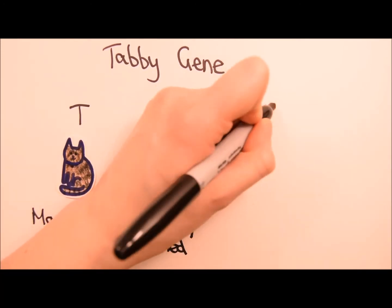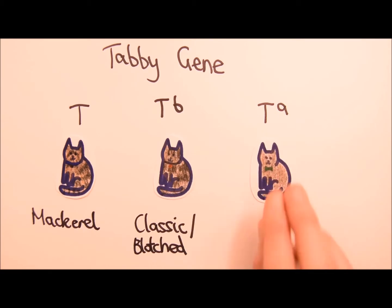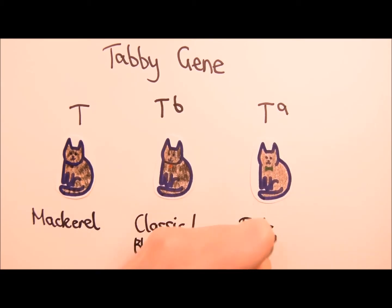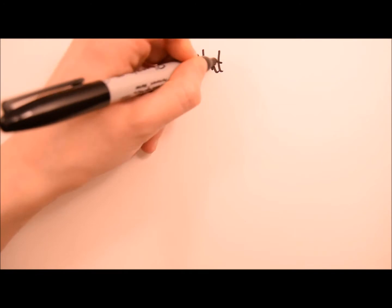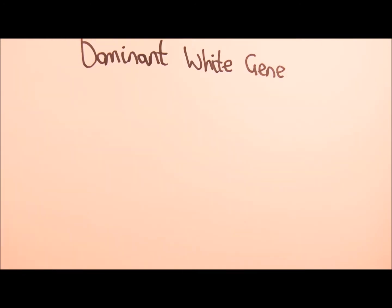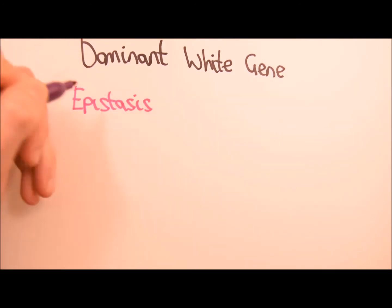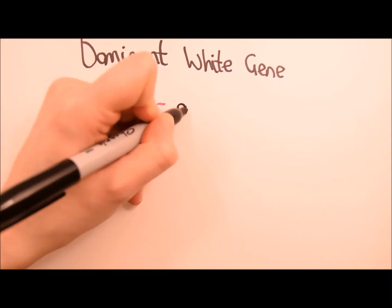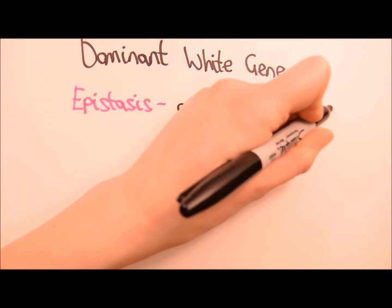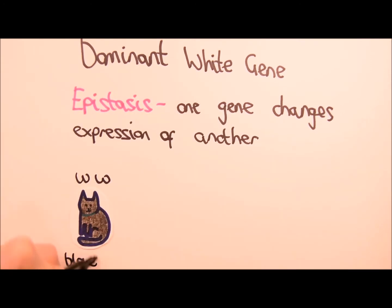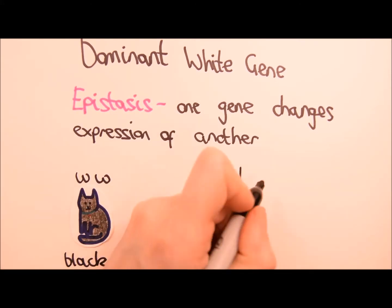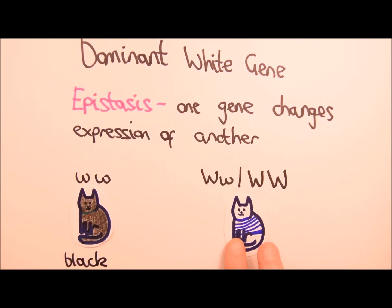The recessive allele will produce the classic, spotted tabby, or the ticked coat. Like the black coat alleles, these also have a dominance hierarchy which goes mackerel, classic, ticked. The dominant white gene in cats demonstrates epistasis, where one gene changes the expression of another. When present, the dominant allele masks the effects of other genes, such as the black gene, and changes the coat colour to white.